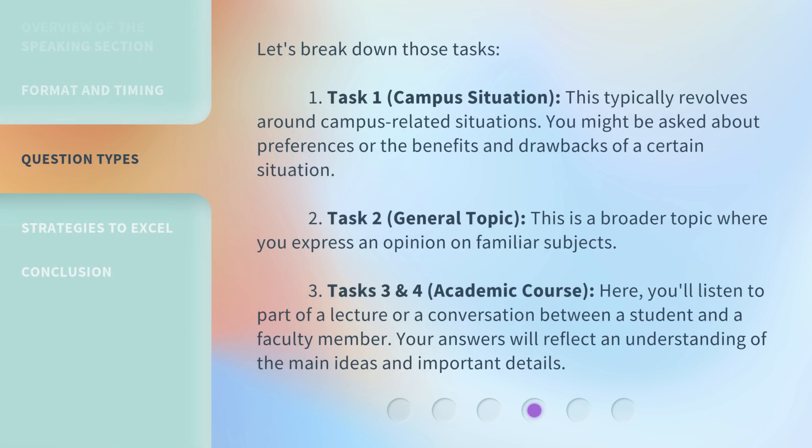Let's break down those tasks. Task 1 is the Campus Situation task. This typically revolves around campus-related situations. You might be asked about preferences or the benefits and drawbacks of a certain situation. Task 2 is the General Topic task — a broader topic where you express an opinion on familiar subjects. Tasks 3 and 4 are Academic Course tasks. Here, you'll listen to part of a lecture or a conversation between a student and a faculty member, and your answers will reflect an understanding of the main ideas and important details.